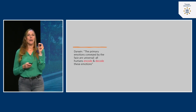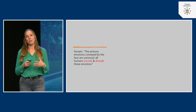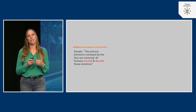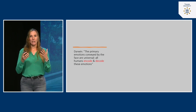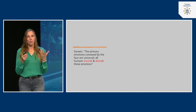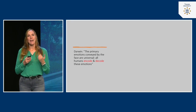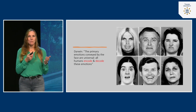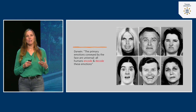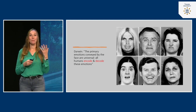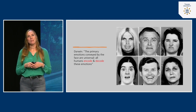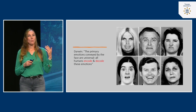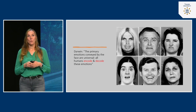We don't only judge personalities when we see a person — we also judge emotions. This is a big part of evolutionary theory. Darwin already proposed that people are key experts in both encoding and decoding emotions. Encoding means displaying emotions; we know how to show key emotions in the face and how to read them. Here you see the six basic emotions that people can both encode and decode: anger, happiness, surprise, disgust, sadness, and fear — and we tend to be very good at this.